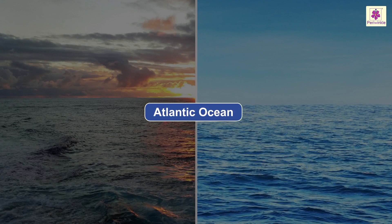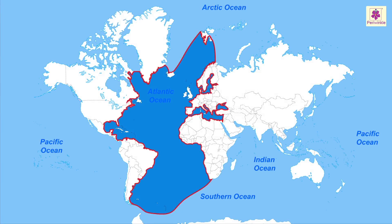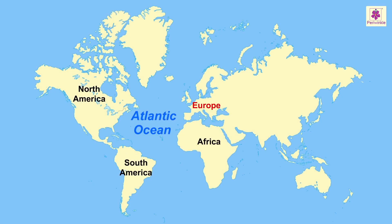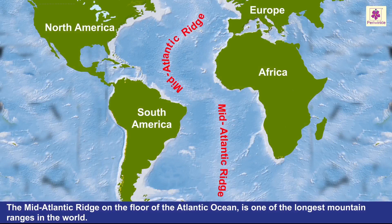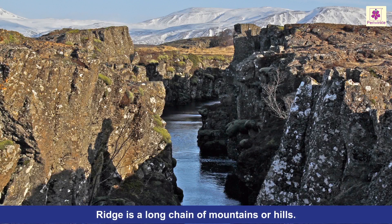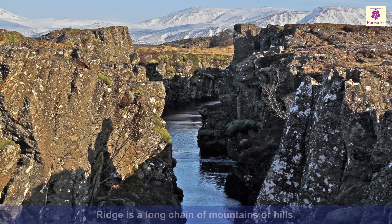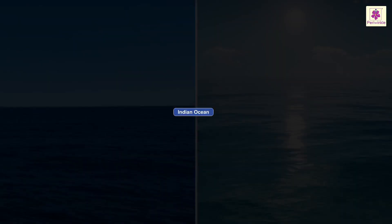The Atlantic Ocean is the second largest ocean. It is almost S-shaped as it skirts Europe and Africa to the east and North and South America to the west. The Mid-Atlantic Ridge on the floor of the Atlantic Ocean is one of the longest mountain ranges in the world. A ridge is a long chain of mountains or hills. It has many high peaks which form islands in the ocean — a very unique feature of this ocean.